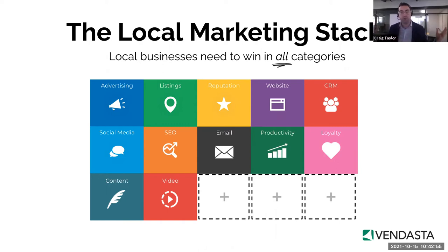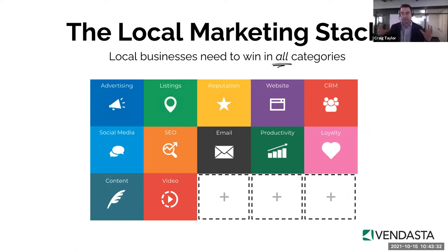We have a massive amount of potential products to go to market with. There's this marketing stack out there and we want to meet each of those areas, plus help with productivity. You can use the Vendasta system for your own custom products. The question becomes: how do you take this marketplace and create something formulaic or standardized that you can use as a template, especially when you're starting out?